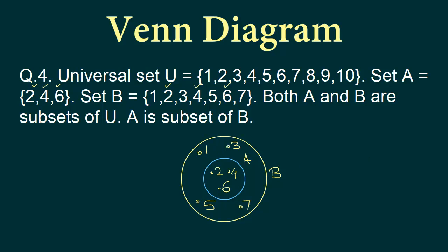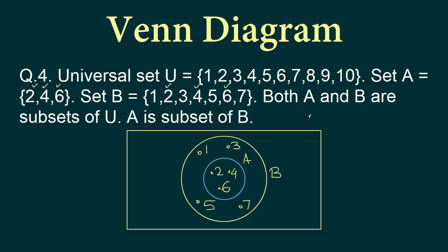Now we draw the universal set as a rectangle, labelled with uppercase U. It is a convention to write the letter for the universal set at the top right of the rectangle. We already have 1, 2, 3, 4, 5, 6, and 7 accounted for. So we still need 8, 9, and 10. We arbitrarily place them inside the rectangle but outside both circles.